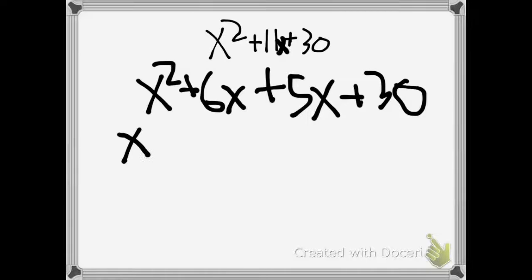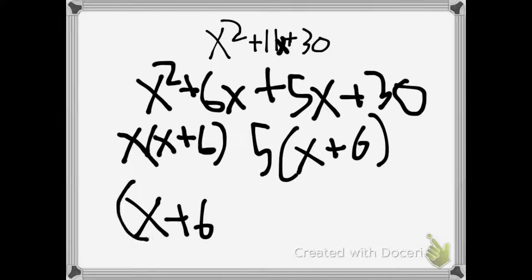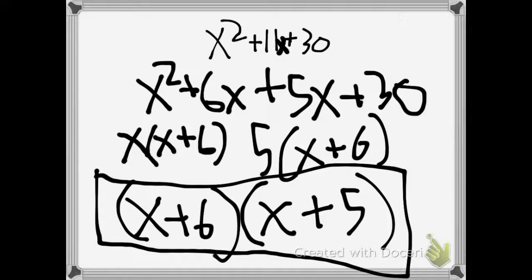In this case it's x, and the remainder is x plus 6. For the next one we do the same, and the greatest common factor is 5. So we get x plus 6. So we combine that to have x plus 6 and x plus 5. And that is the first quadratic equation solved.